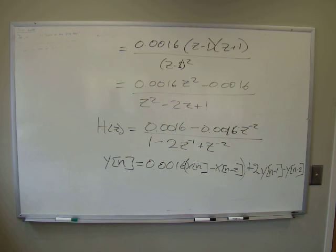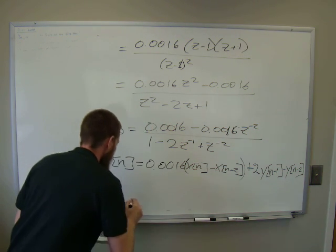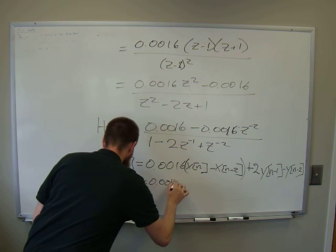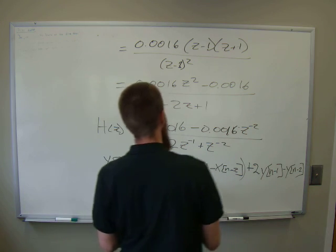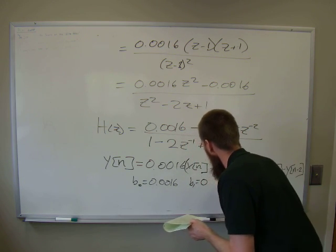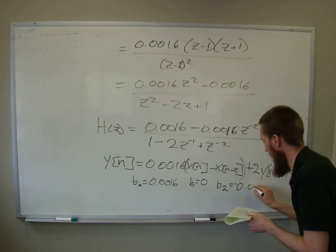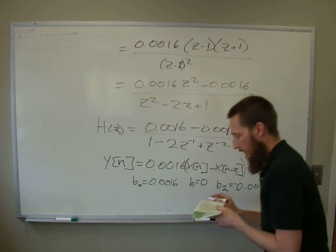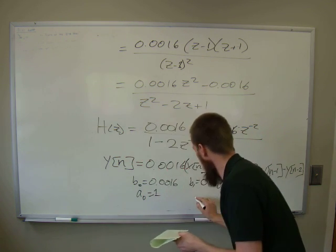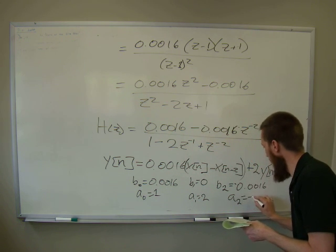Taking the inverse Z transform and moving terms to the other side gives the difference equation: Y of N equals 0.0016 times the quantity X of N minus X of N minus two, plus 2 Y of N minus one minus Y of N minus two. So B-zero equals 0.0016, B-one equals zero, B-two equals negative 0.0016, A-zero equals one, A-one equals two, and A-two equals negative 0.0016.